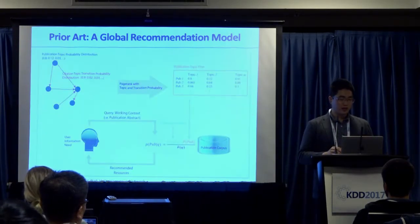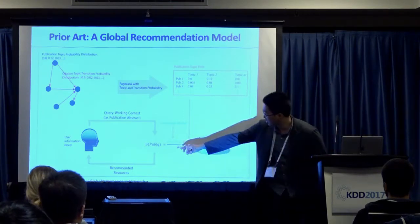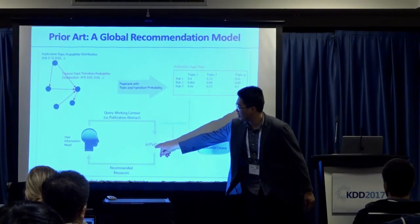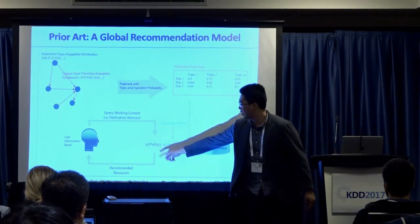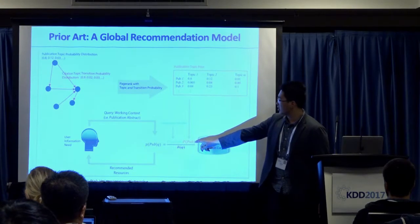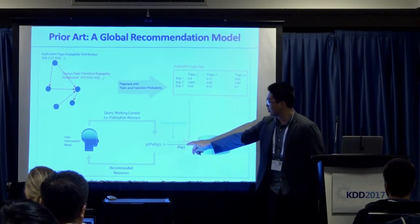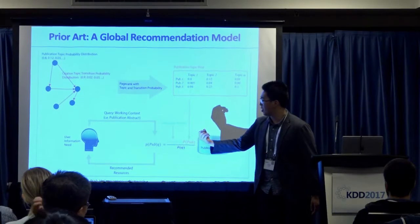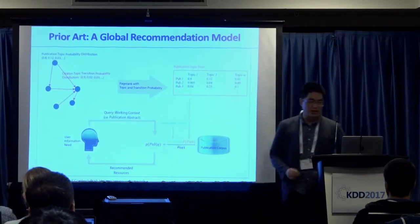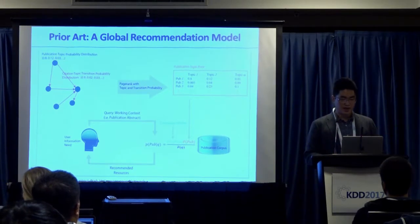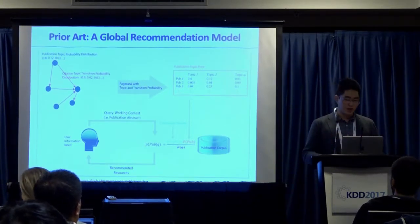The global model looks like this: given a query, you output how likely you want to cite publication A. The likelihood is basically the authority of the publication multiplied by how much the publication and the query paper match. This is a language model that consists of both a content component and a topic component, taking care of both topic match and content match.